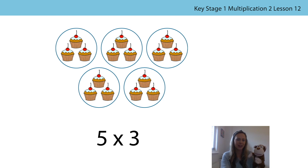Bunga says that the five represents the number of groups. Well done, Bunga. And the three represents the number of cupcakes in each group.